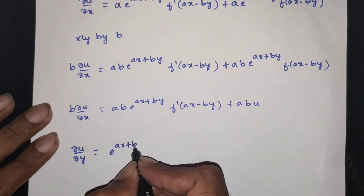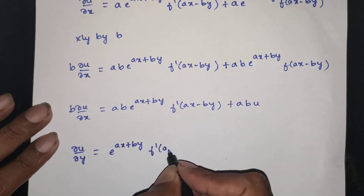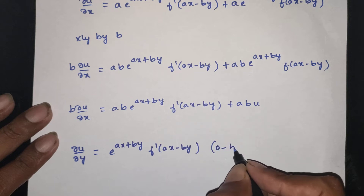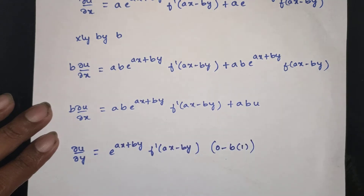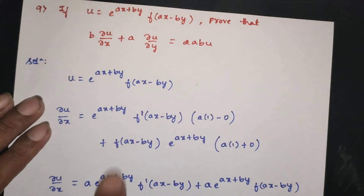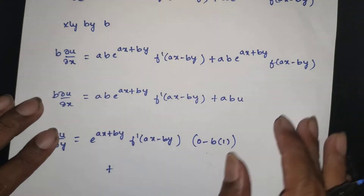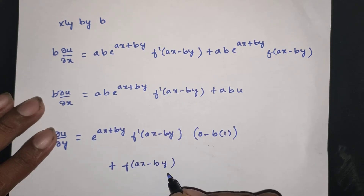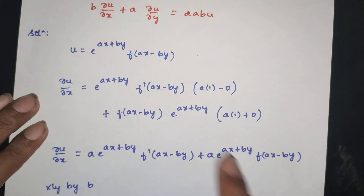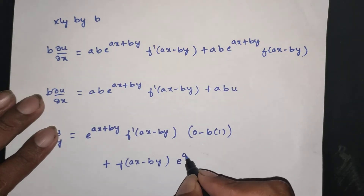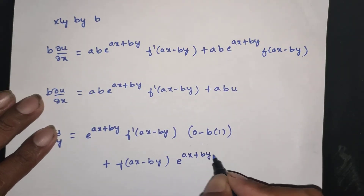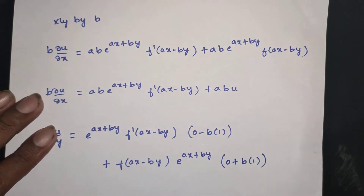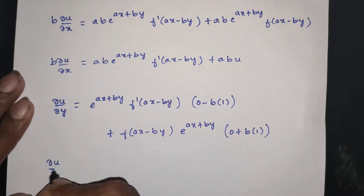Next, ∂u/∂y: differentiate e power ax plus by — gives b into e power ax plus by — times f dash of ax minus by, where y coefficient is minus b into 1, plus e power ax plus by, f of ax minus by, times b into 1. So ∂u/∂y equals minus b·e power ax plus by, f dash of ax minus by, plus b·e power ax plus by, f of ax minus by.